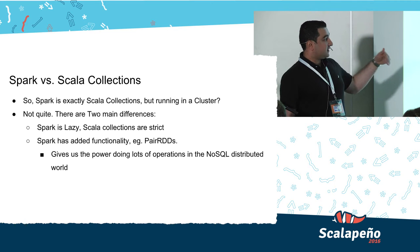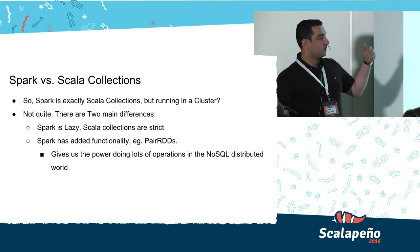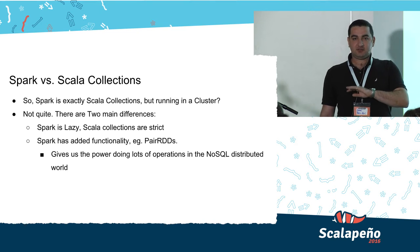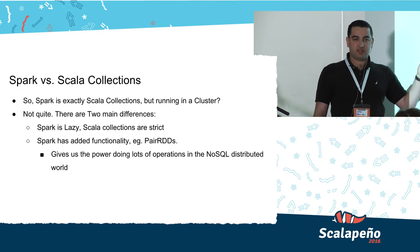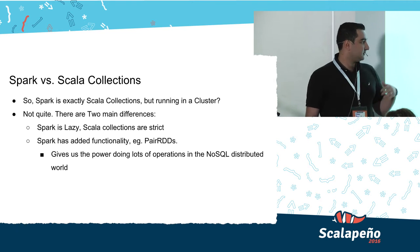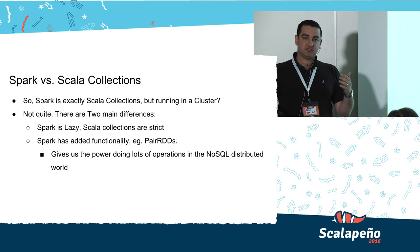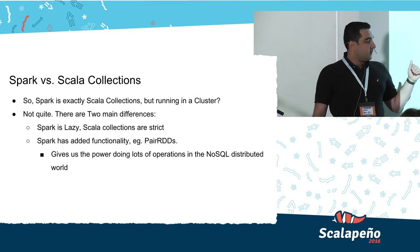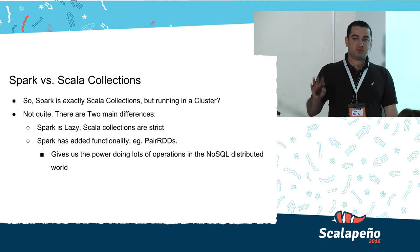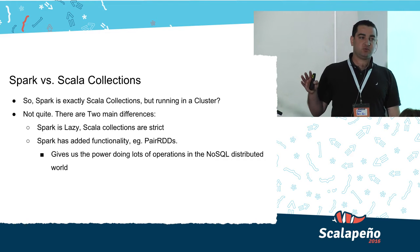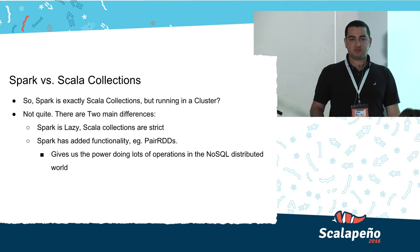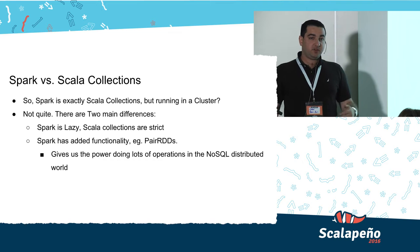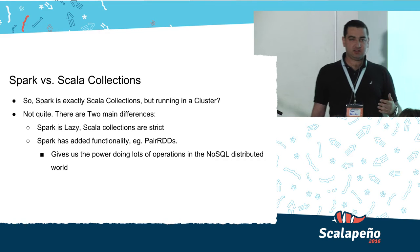Another thing is that Spark gives us pair RDDs. If we do the analogy: regular collections are like lists, and pair RDDs are more like maps or associative maps. They give us a lot of power in the NoSQL distributed world, because something we lack in the NoSQL world is joins, unions, and aggregation operations. Pair RDDs give us the full functionality of all of those things.